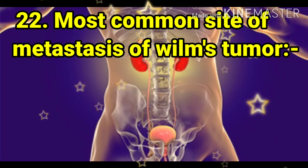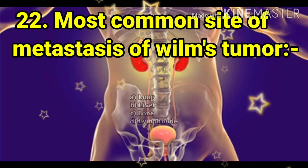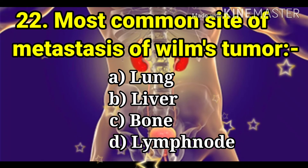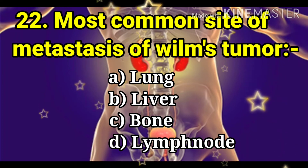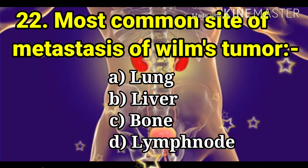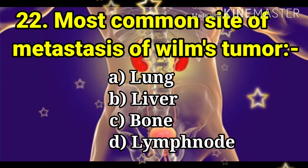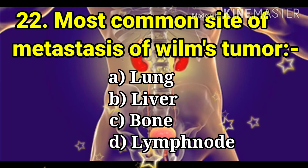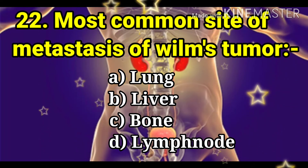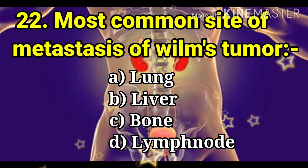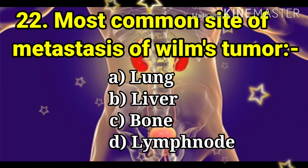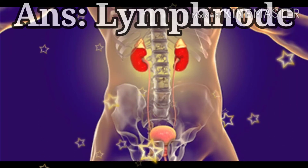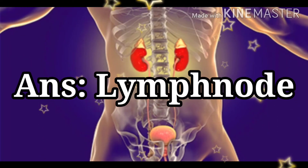Next question: the most common site of metastasis of Wilms tumor. The options are lung, liver, bone, and lymph node. The answer is lymph node.